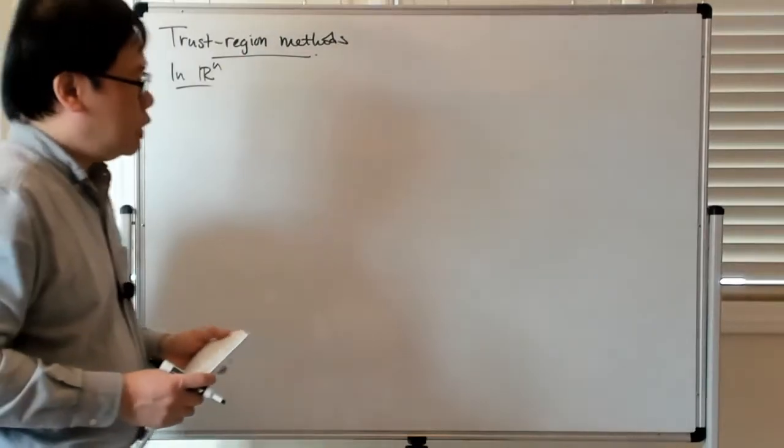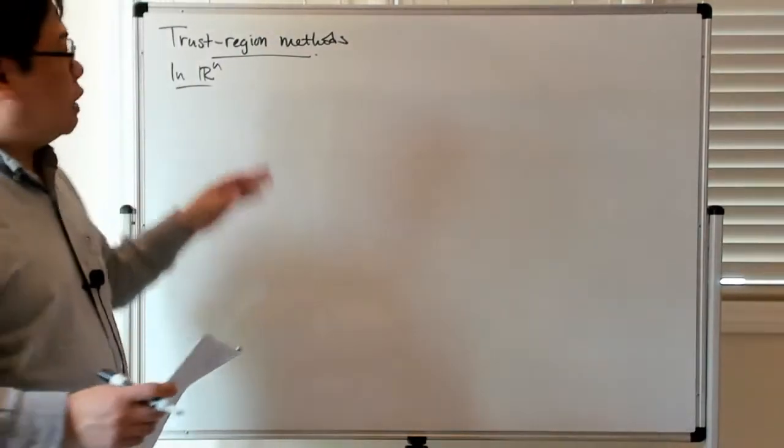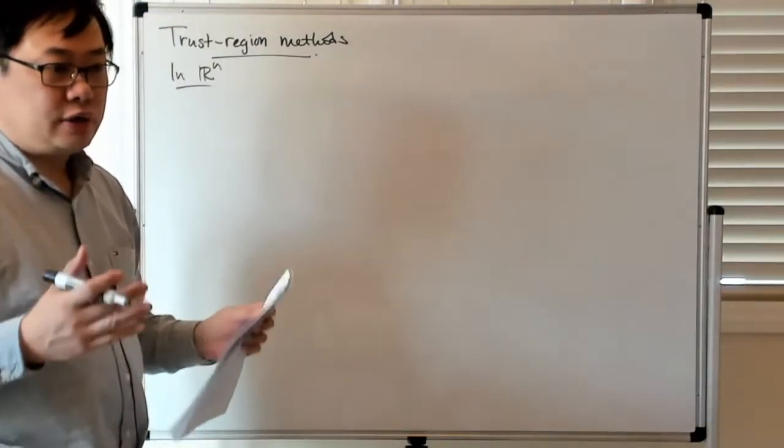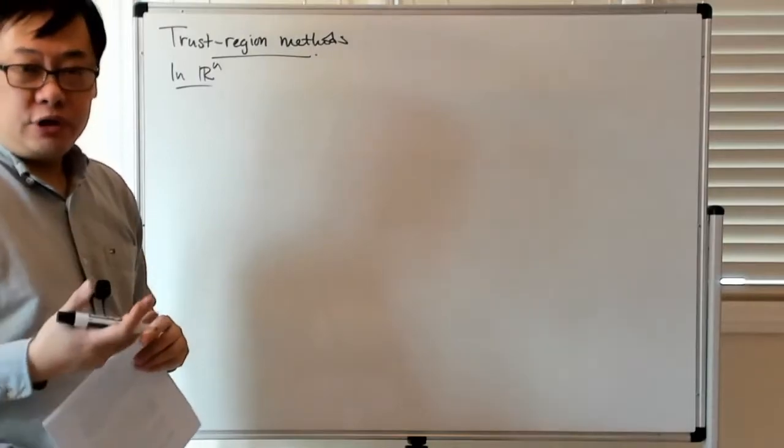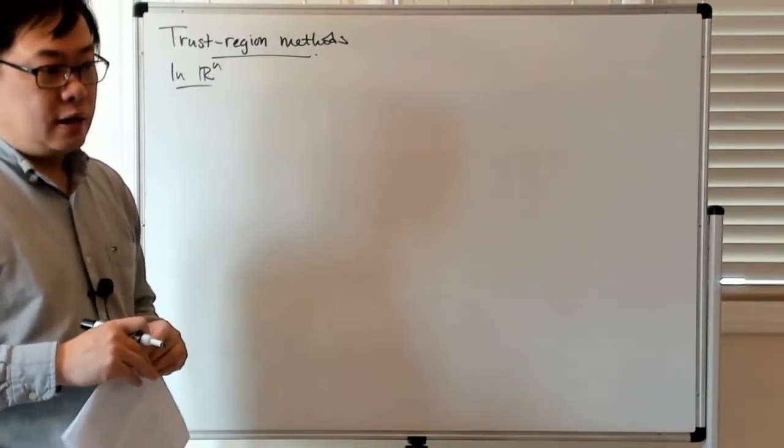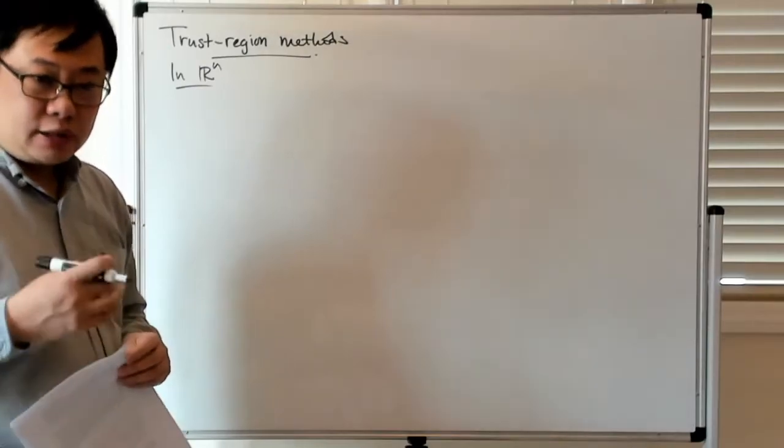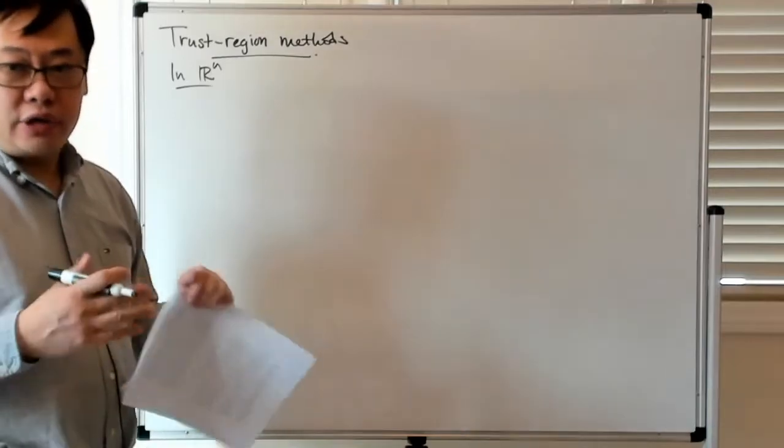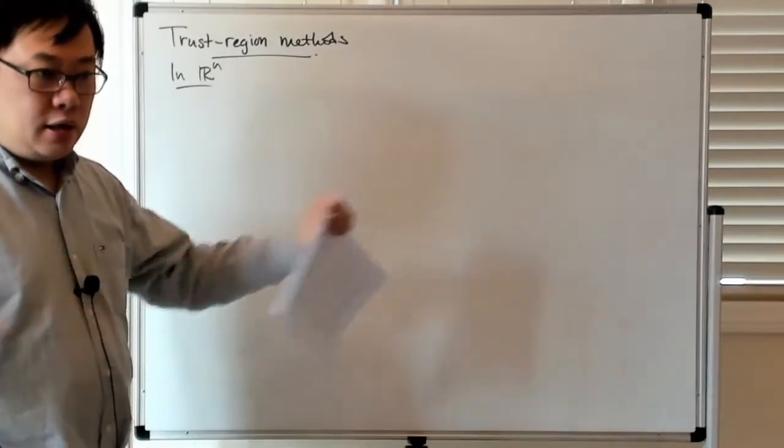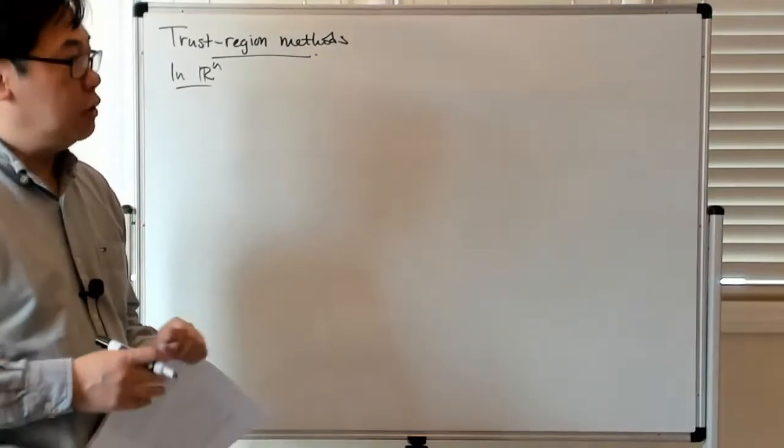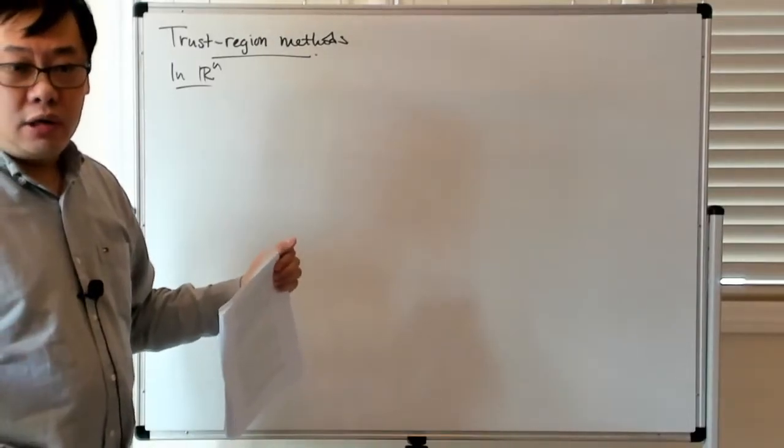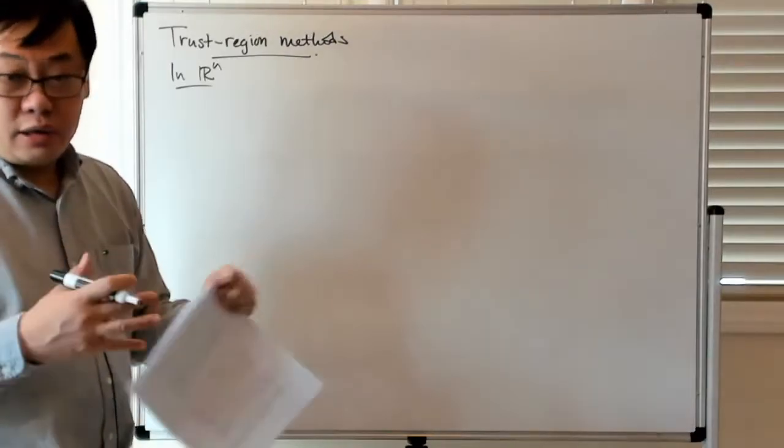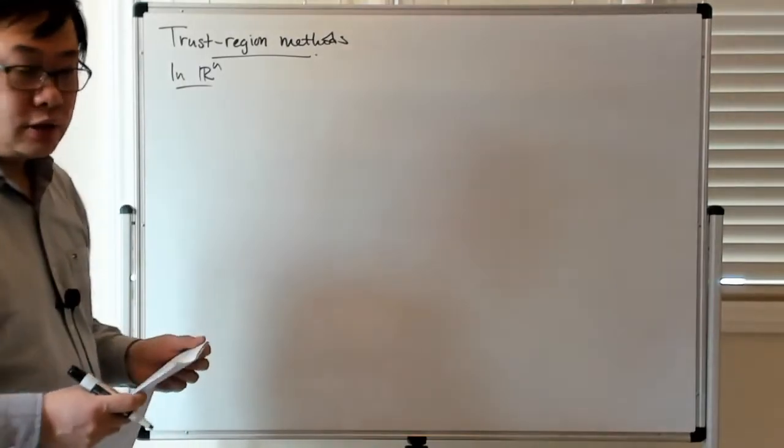And the reason why we refer to such methods as trust region methods is because more or less it's like we're saying that based on what we've observed, it's like about the ability of the quadratic model to actually predict what the actual function value will be. We either trust the quadratic model by increasing the size of this ball, or we distrust the model by either rejecting the update or reducing the size of this ball.